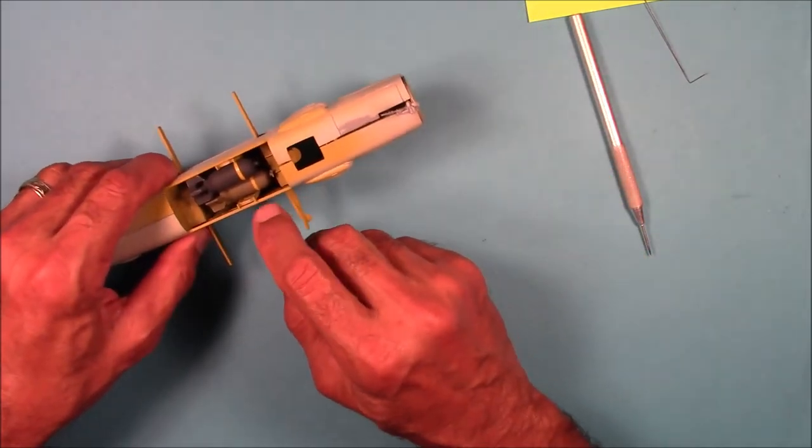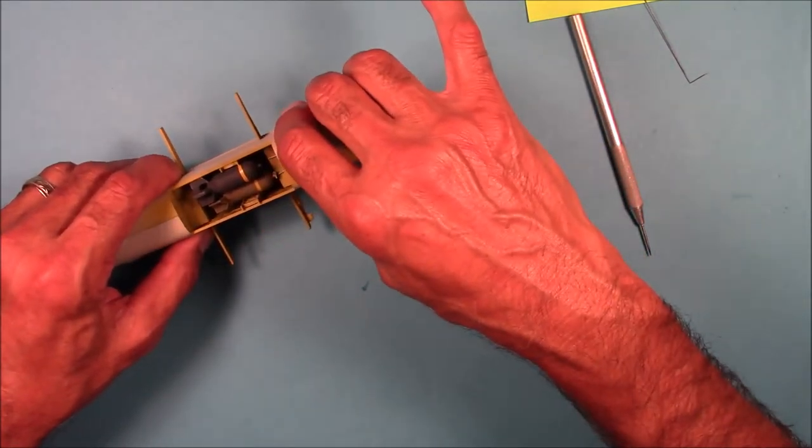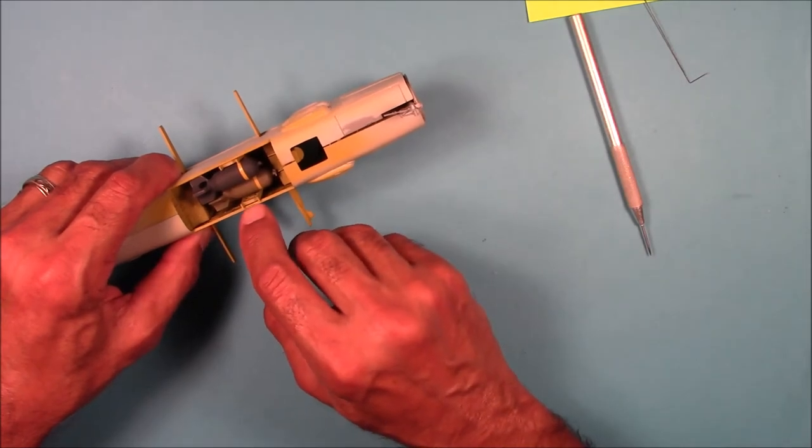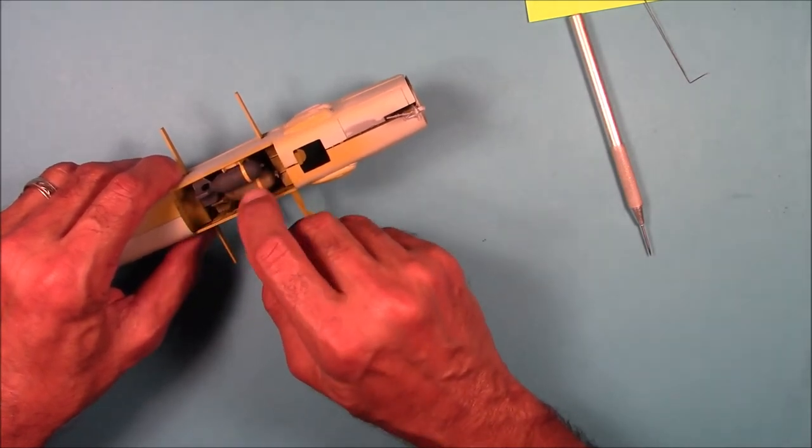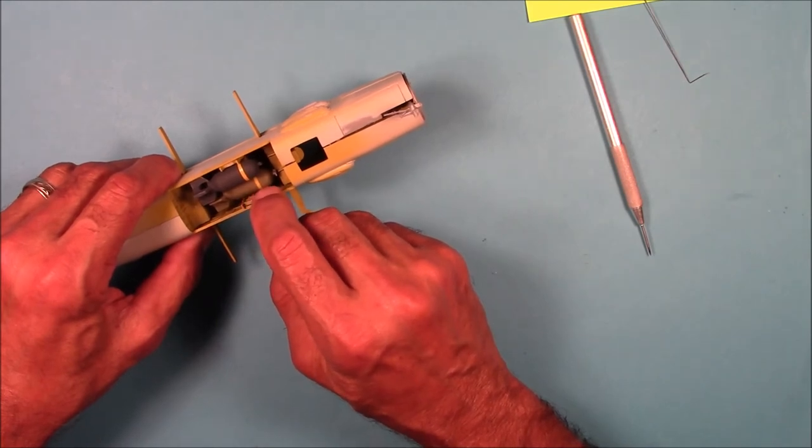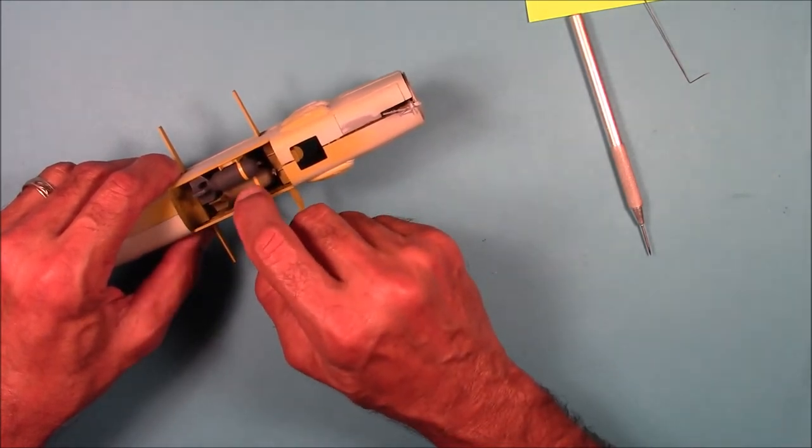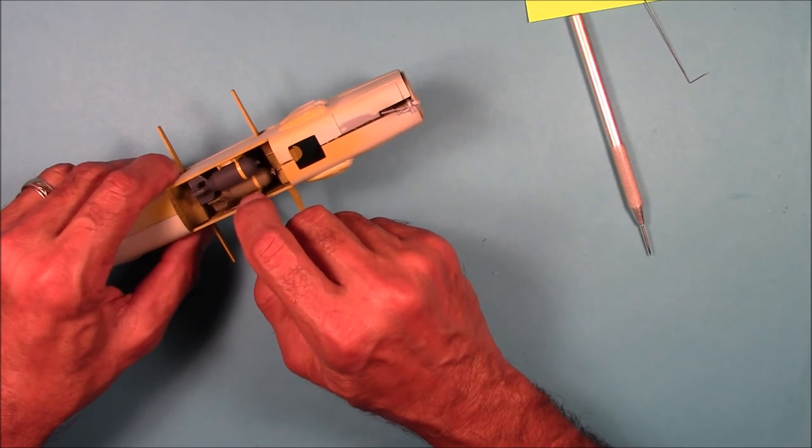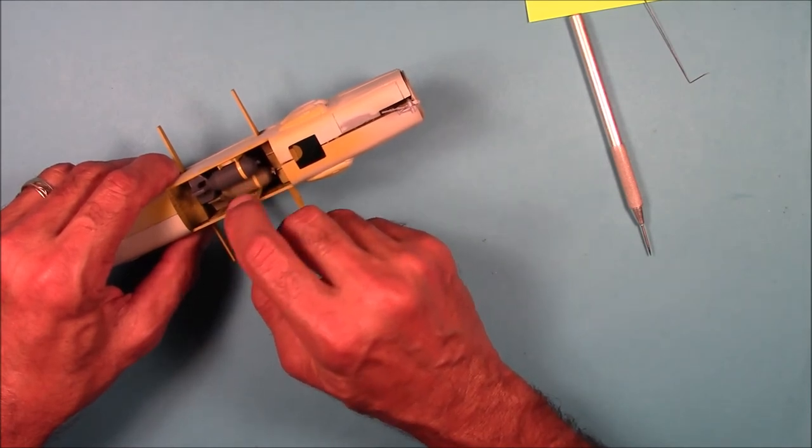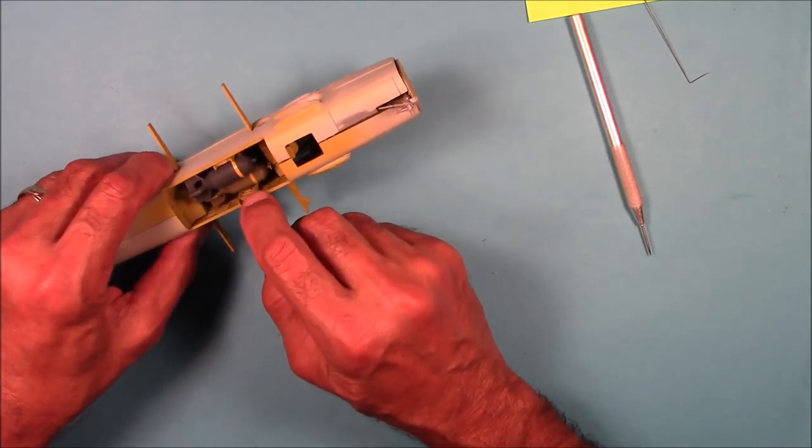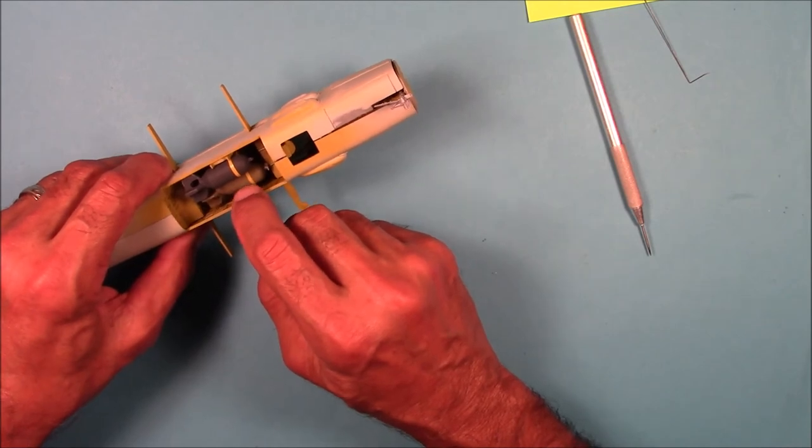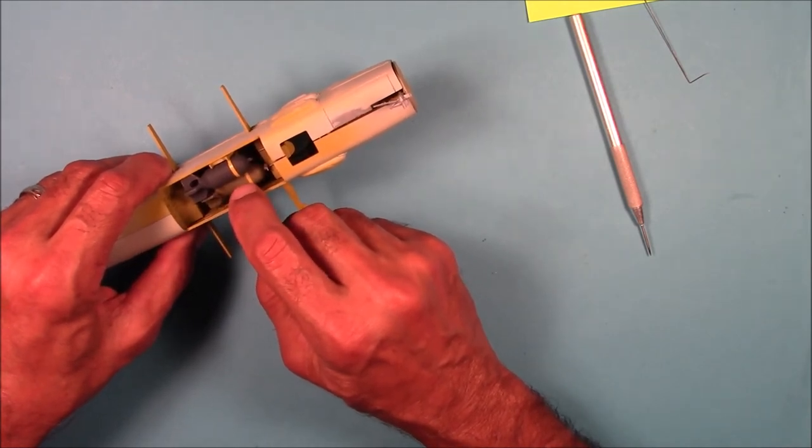The reason why I did that is if you close up the fuselage, glue it in place, and then install these bomb racks, and then install the bombs themselves, it's a very difficult process because you don't have a lot of space to work with. So it's really hard to get these bombs to sit correctly on the rack pins. So this process worked out really well.